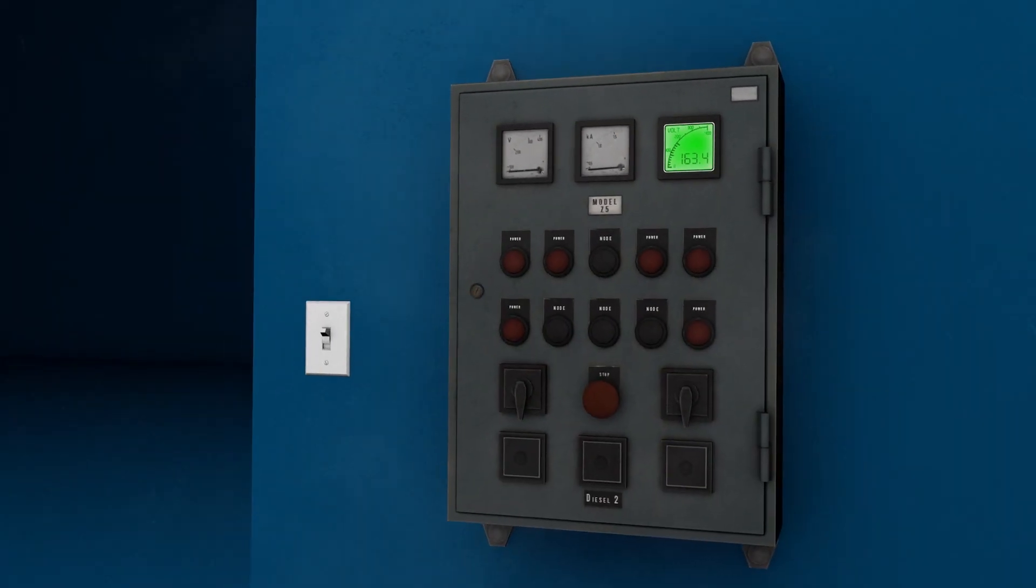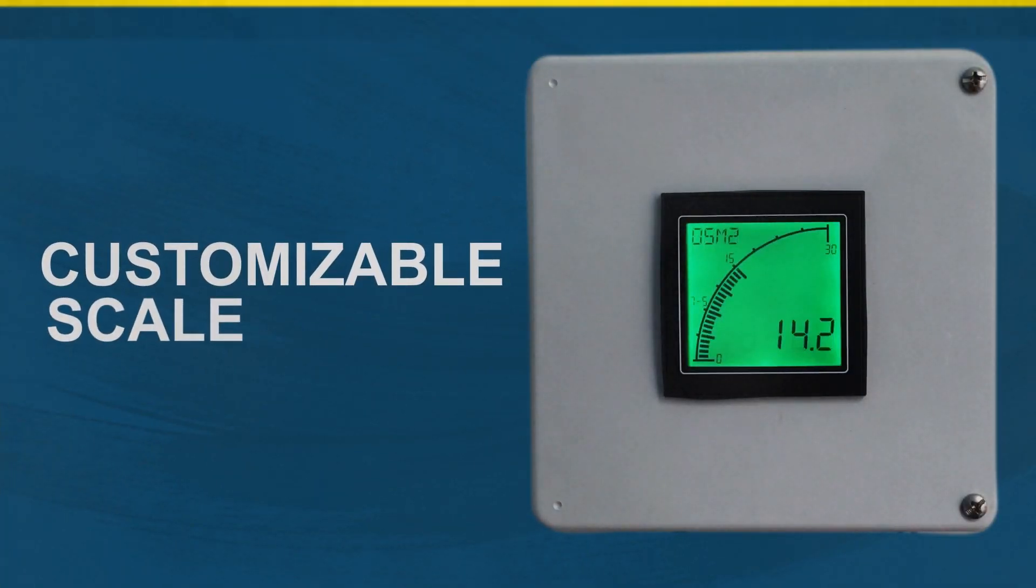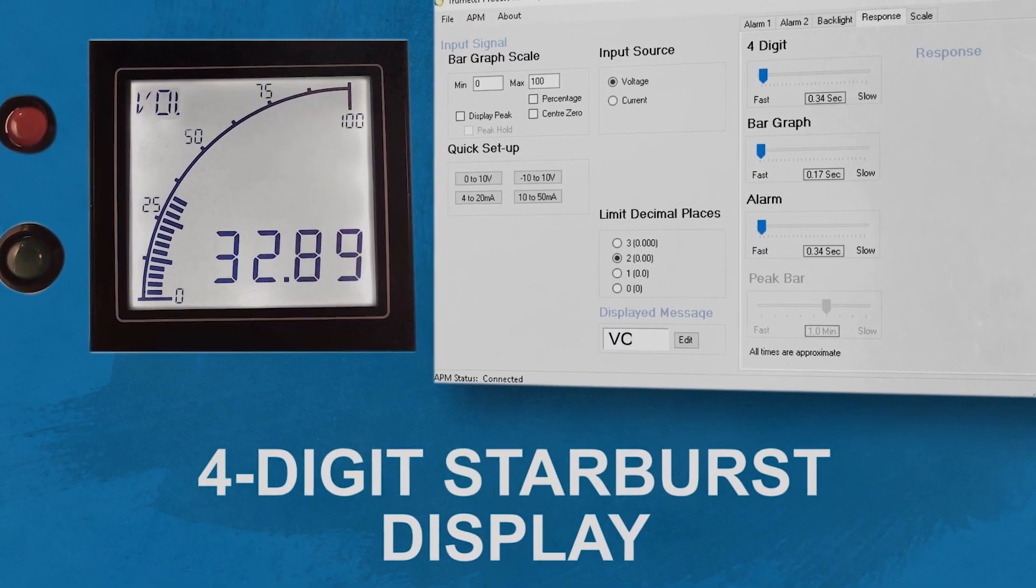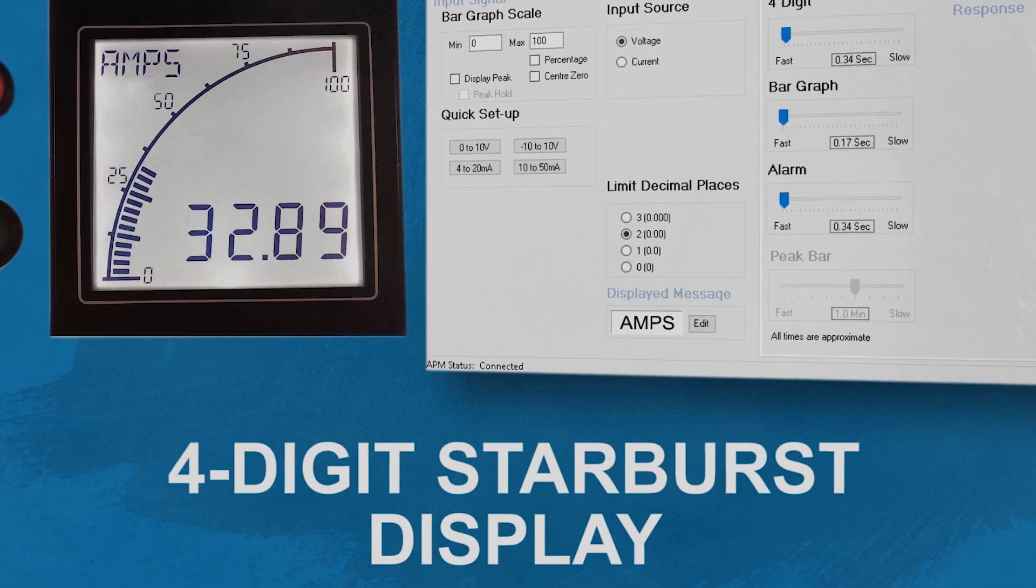Our APMs do what sleepy old analog meters can only dream of. Customizable scale? Yes, sir. Alarms? You get two set points. Four-digit starburst display for custom messages and enunciators? Of course.